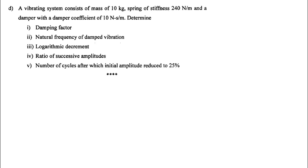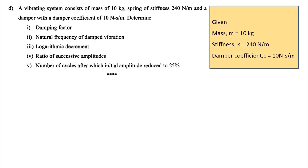Now the second question — a problem. A vibrating system consists of a mass of 10 kg, a spring of stiffness 240 N/m, and a damper with damping coefficient 10 N·s/m. We need to determine: damping factor, natural frequency of damped vibration, logarithmic decrement, ratio of successive amplitudes, and the number of cycles after which initial amplitude is reduced to 25%.